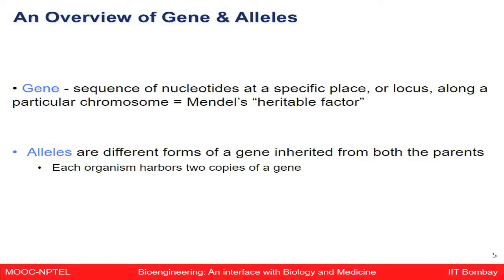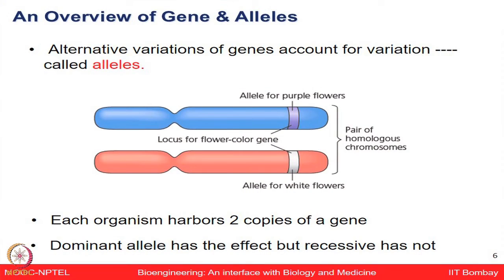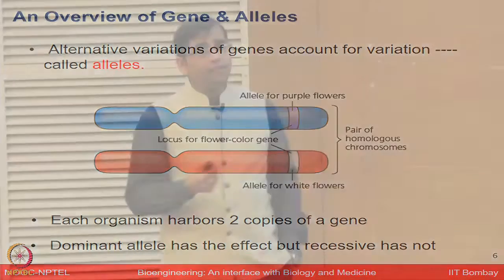There can be different alleles of a given gene, with one copy from each parent. Capital P and small p represent the same color characteristic — purple or white — and are two alleles of a given gene inherited from the parents. Alternative variations of genes are known as alleles. Each organism harbors two copies of a given gene. A dominant allele shows its effect; a recessive one does not.